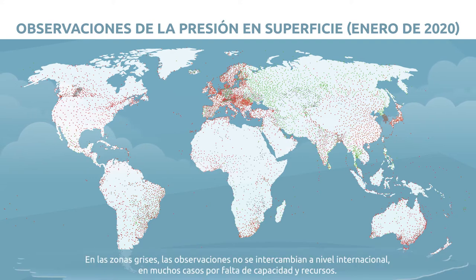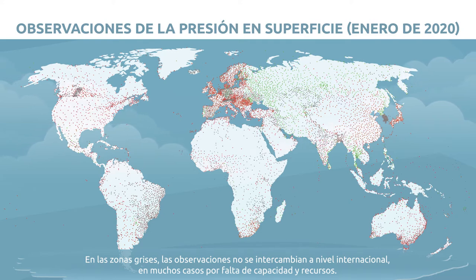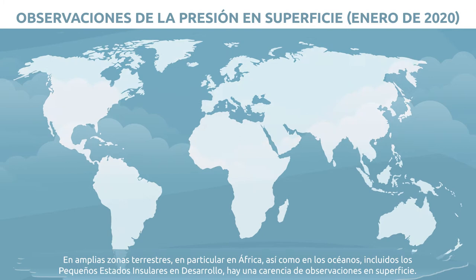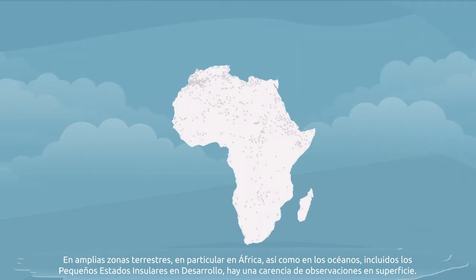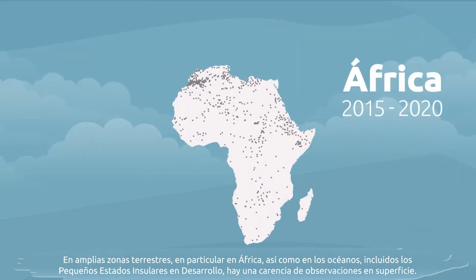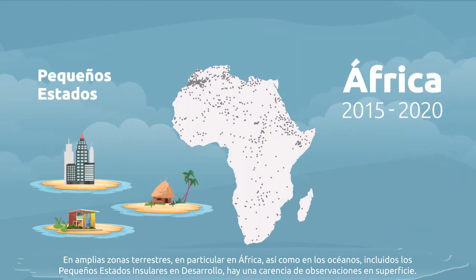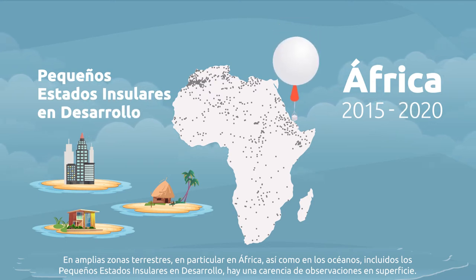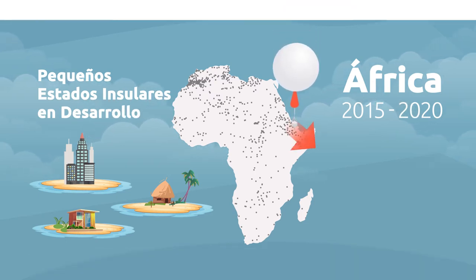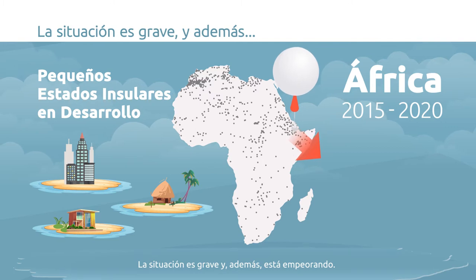The grey areas show where observations are not shared internationally, in many cases due to a lack of capacity and resources. Over vast areas of land, particularly in Africa and the oceans, including small island developing states, surface-based observations are missing. The situation is not only bad, it is getting worse.